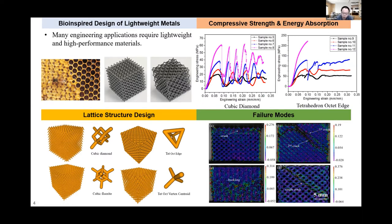It's almost impossible for traditional manufacturing processes to fabricate these complicated lattice structures. We fabricated them using selective laser melting with an aluminum alloy material, which has very low density. By being inspired by honeycomb and crystal structures, we can increase the strength-to-weight ratio of different lattice structures. After fabricating these lattice structures, we conducted compression tests to understand the structure-property relationships.